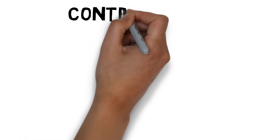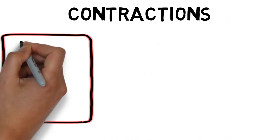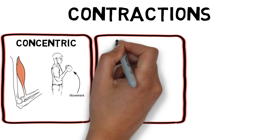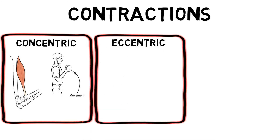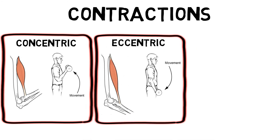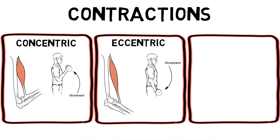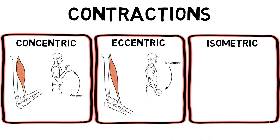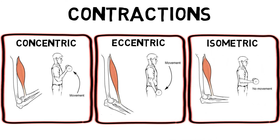Muscles can produce three different types of contractions. Concentric contractions occur when the muscle shortens under force. Eccentric contractions occur when the muscle lengthens. And isometric contractions are static contractions without any movement, producing force without any change in joint angle.